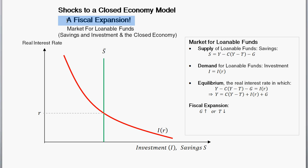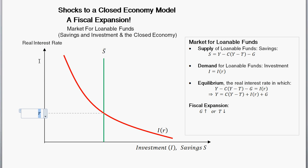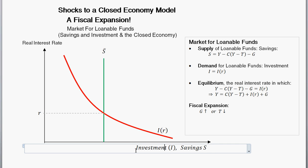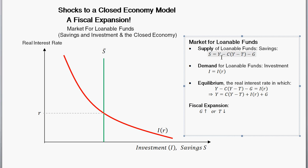So starting off with the model: along the vertical axis we have the real interest rate in the market for loanable funds. Along the horizontal axis we have investment and savings, expressed as a dollar amount. The vertical line represents our savings. National savings equals income (output Y), less consumption C, where consumption is a function of disposable income (Y minus T), and government spending G.